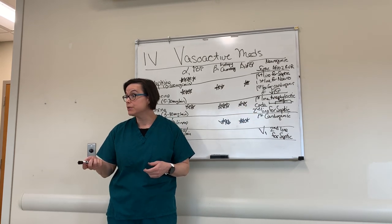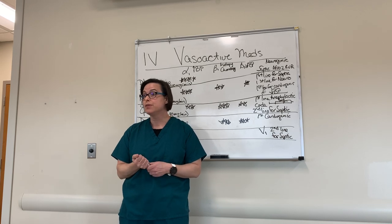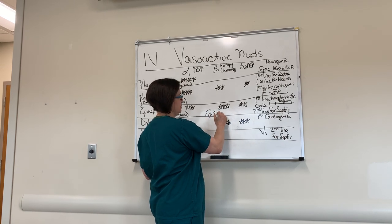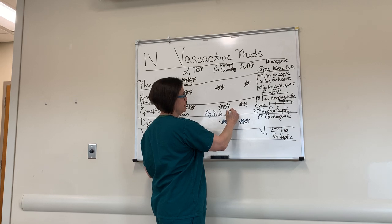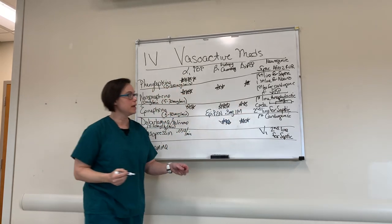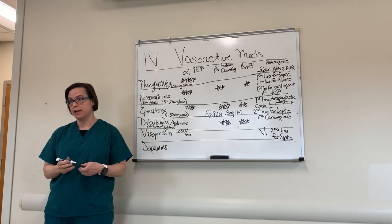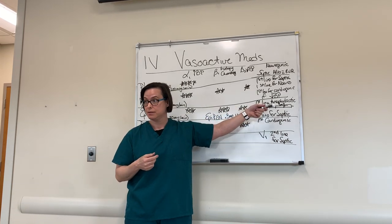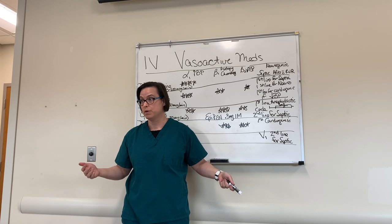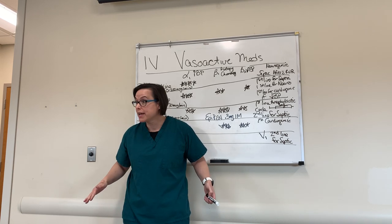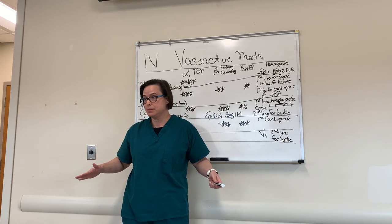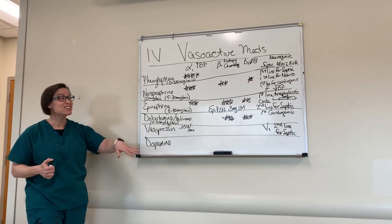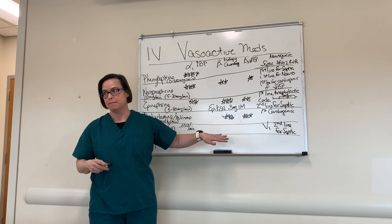For anaphylactic shock, the dose is actually lower and given differently. An EpiPen delivers 0.3 milligrams intramuscularly — not IV. That's a critical distinction: we don't push IV epinephrine in someone with anaphylactic shock. If you don't have an EpiPen, put them on a drip, or if you must give IV, the dose is 50 micrograms — a tiny fraction of the 1 mg code dose.